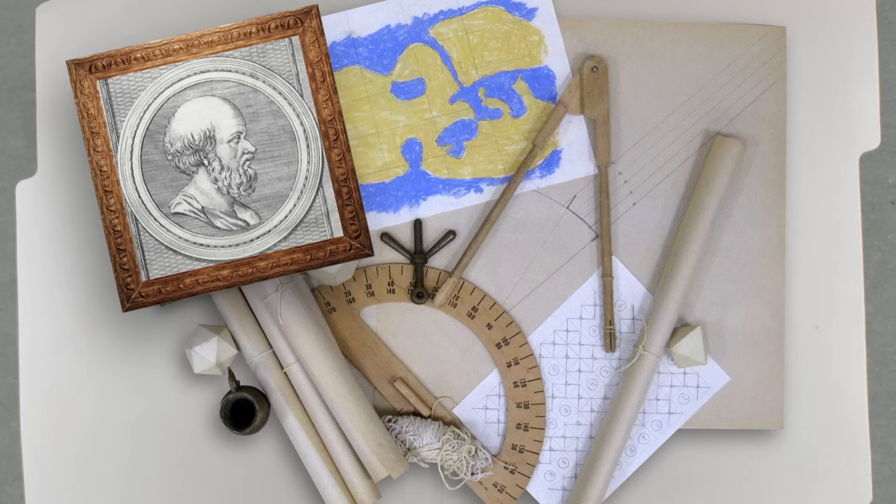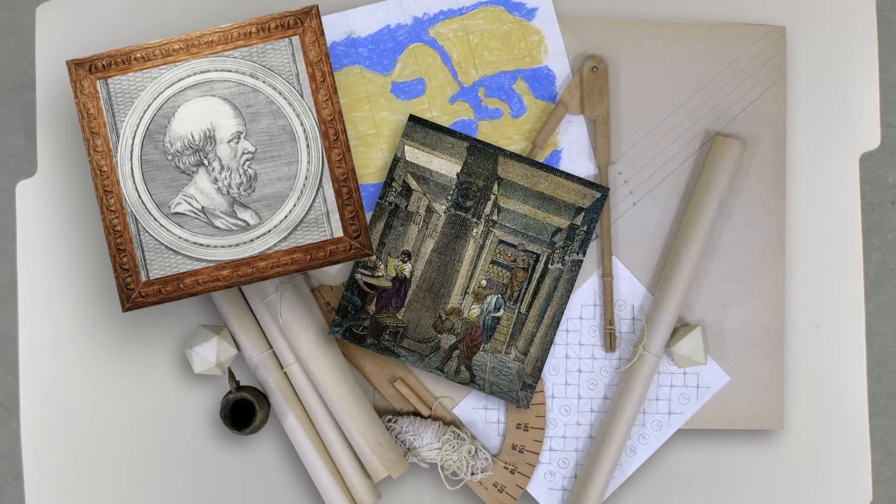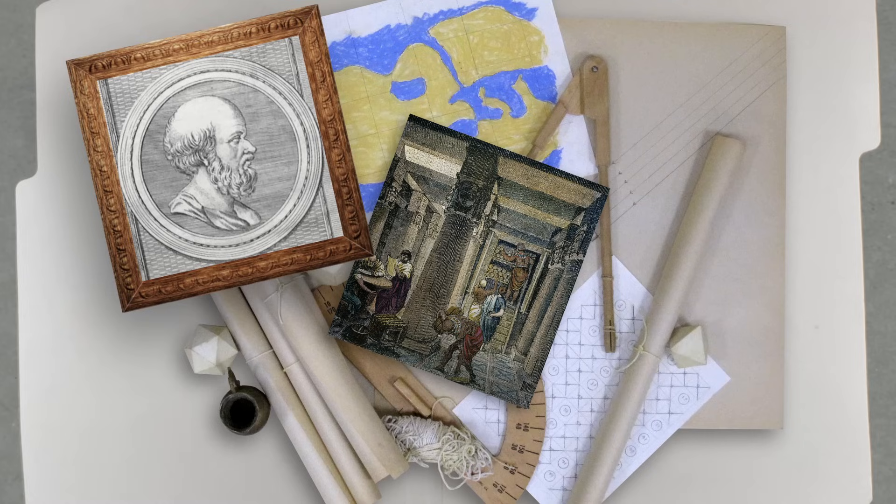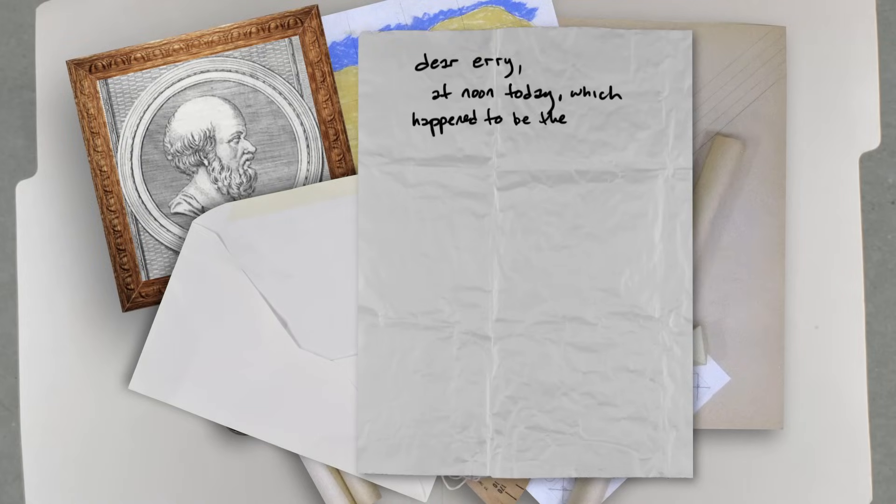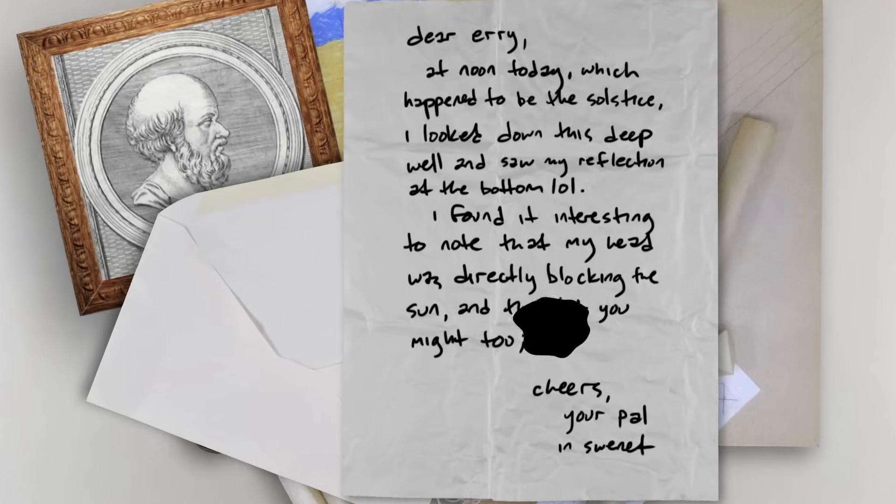Now, Eratosthenes was the third librarian at the great library at Alexandria. And he made many contributions to science. But the one he is most remembered for began in a letter that he received as the librarian from the town of Suenet, which was south of Alexandria.